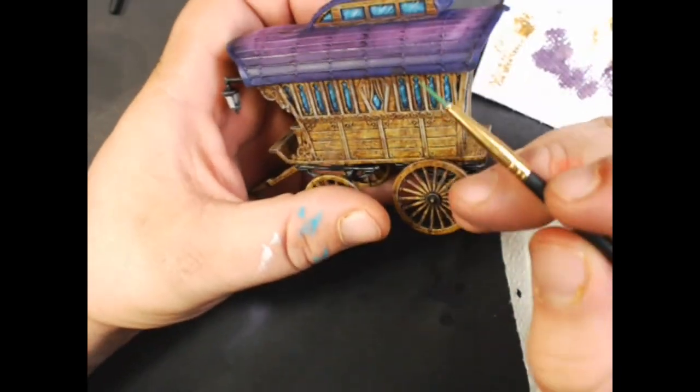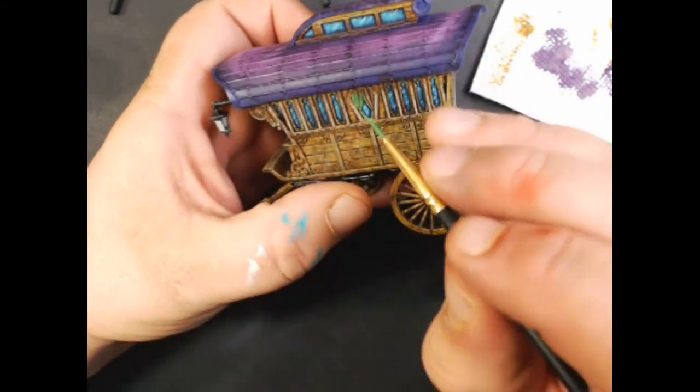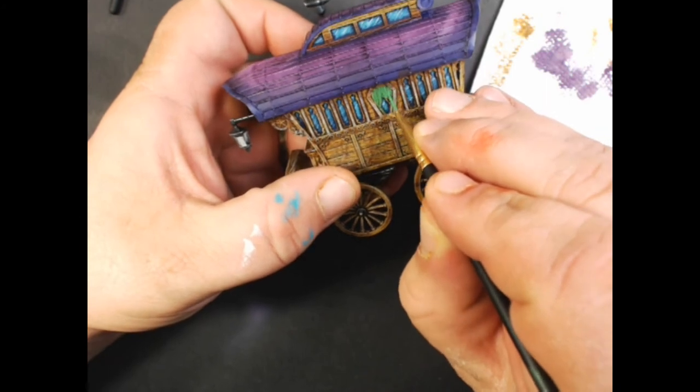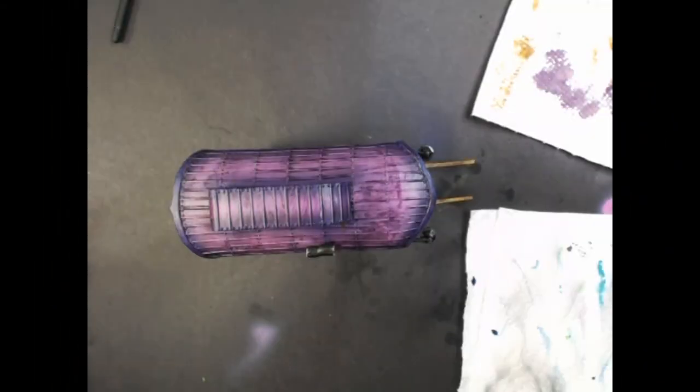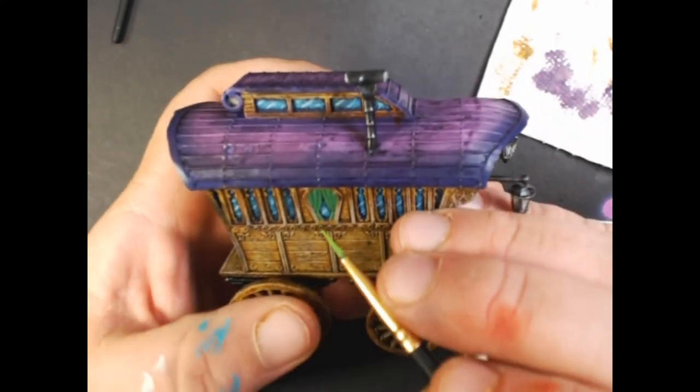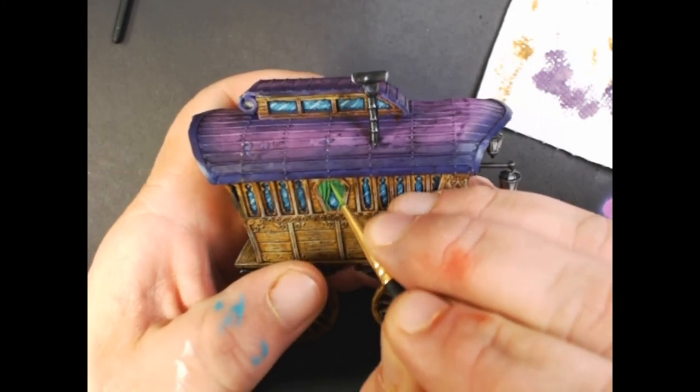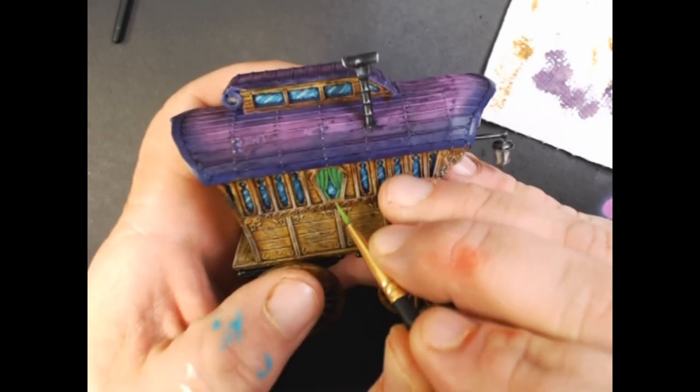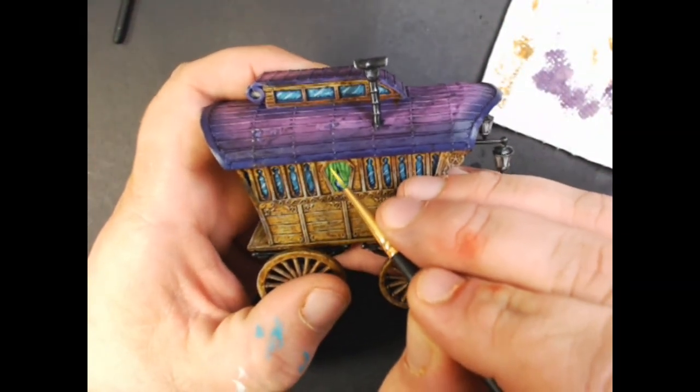Next up we've got P3 Iosin Green, we're going to paint all three sets of curtains. This will probably take two coats to cover. Next up we've got P3 Necrotite Green and now we're just hitting the raised areas on the curtains, trying to keep the Necrotite Green out of the recesses. Then to that Necrotite Green we're going to add some Citadel Flash Gitz Yellow and do a final highlight on the edges of the curtains.